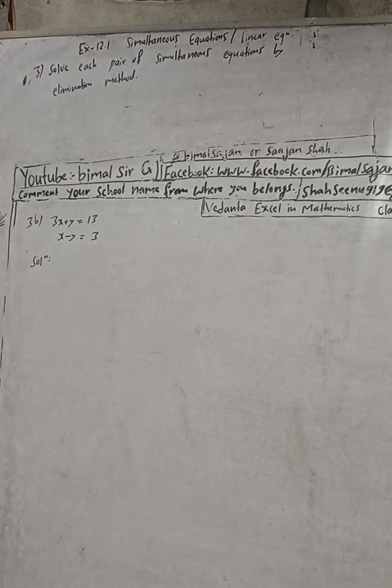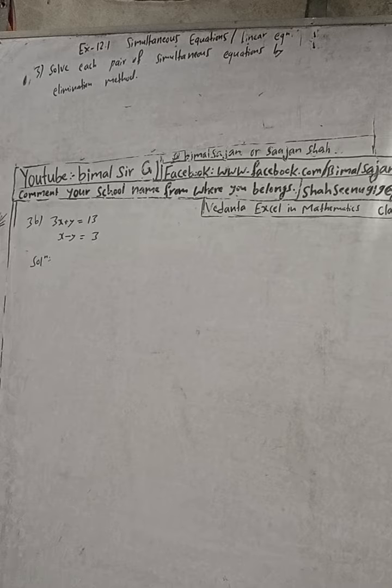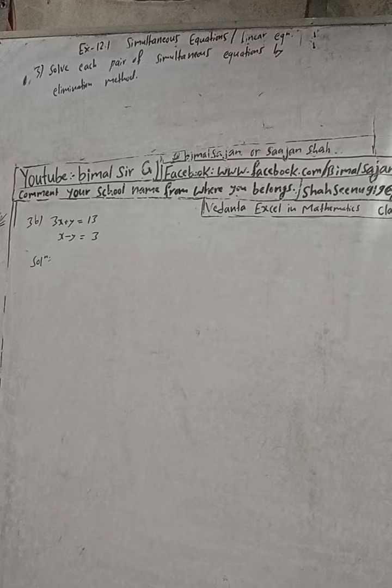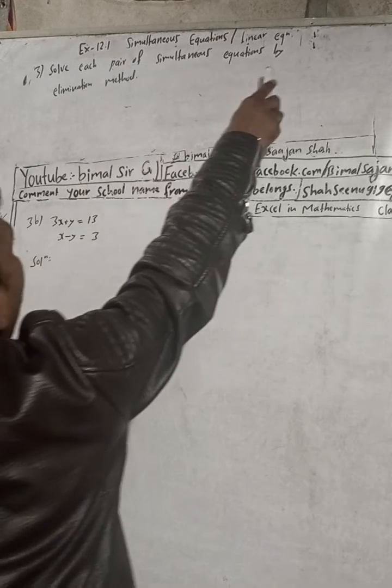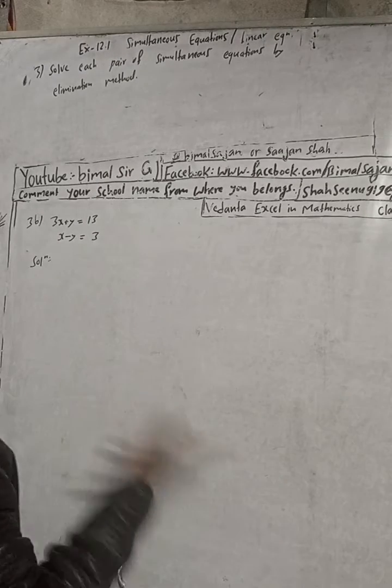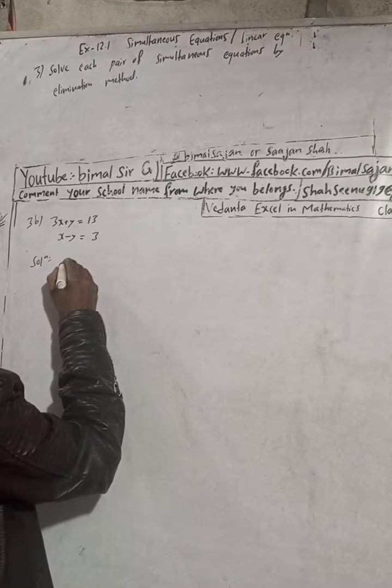Hi class 9 and 10 students, welcome back to Bimal Sarji YouTube channel. This is question number 3b, exercise 12.1, simultaneous equations or linear equations, class 9 Vedanta Excel in mathematics. Here the question is: solve each pair of simultaneous equations by elimination method. We have to eliminate either by adding or subtracting. This is not the substitution method. So what we will do here, given here...